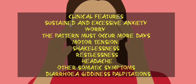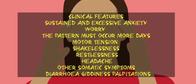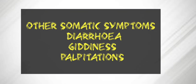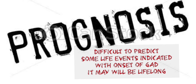Clinical features: sustained and excessive anxiety and worry, accompanied by either motor tension or restlessness. The pattern must occur more days than not for at least six months. Motor tension includes shakiness, restlessness, and headache. Other somatic symptoms include diarrhea, giddiness, and palpitations.